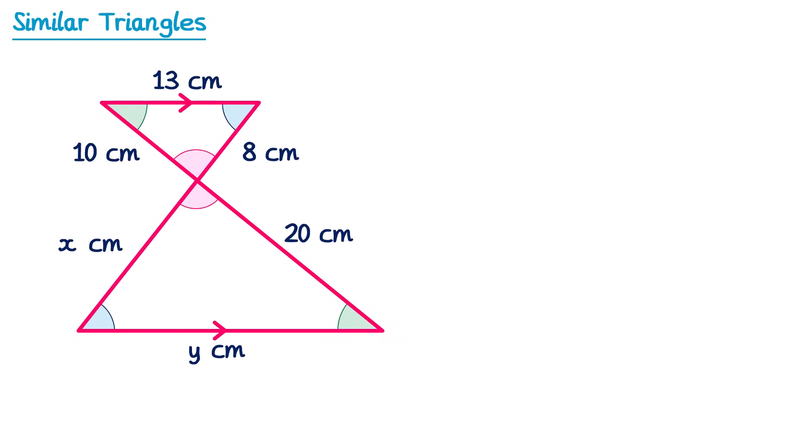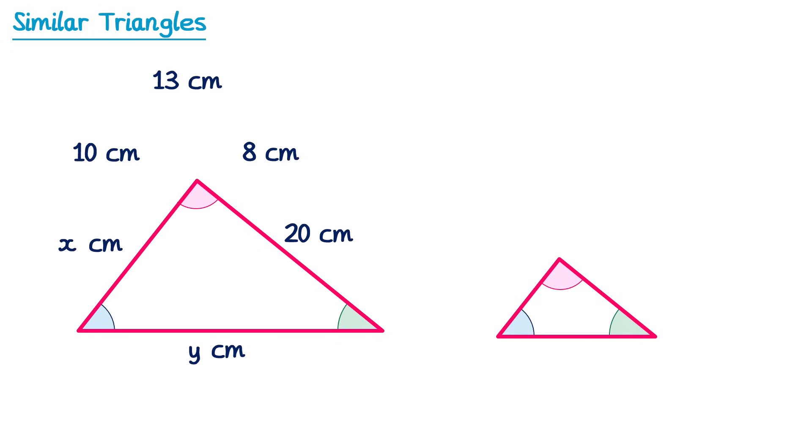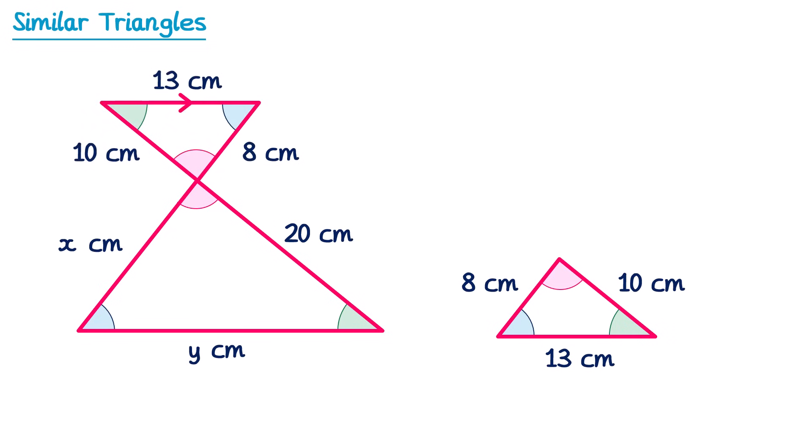From the previous video on similar shapes, we know that when all the angles are the same the shapes must be similar. It's even more obvious if we move the top triangle down and flip it around — the blue, red, and green angles all match. Notice though that the sides move to different positions: the 8 was on the right but is now on the left, the 10 was on the left and is now on the right, and the 13 was on the top and is now on the bottom.